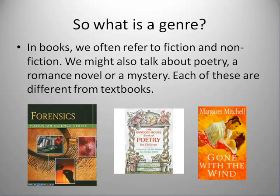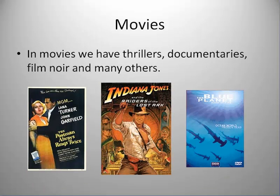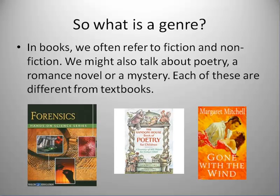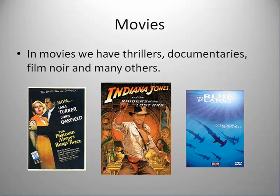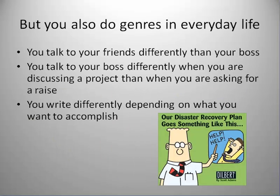Those are called in the literary field genre. They are a way of referring to the totality of how a book is not only written, but who it's written for and what the impact of that writing has. Similarly, you see different movies — everything from musicals to adventure movies to documentaries — and you expect to see things differently. Even within each of those categories there are subcategories, for instance film noir and horror movies. They're just a way of talking about a particular style and audience for a literary or movie work.